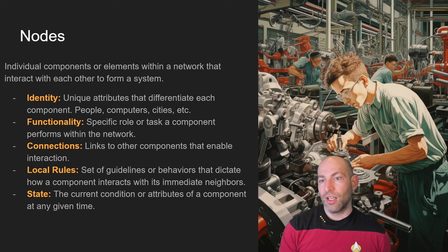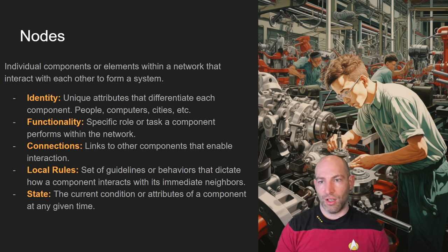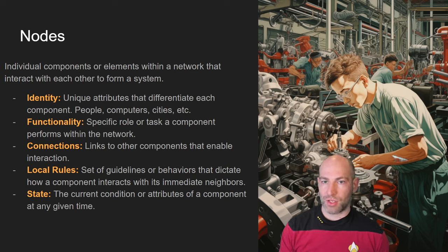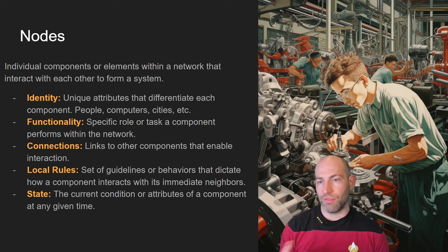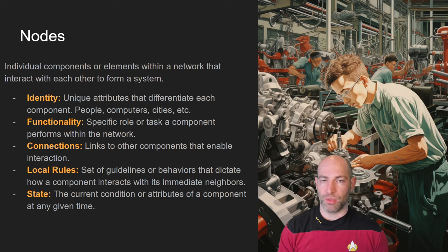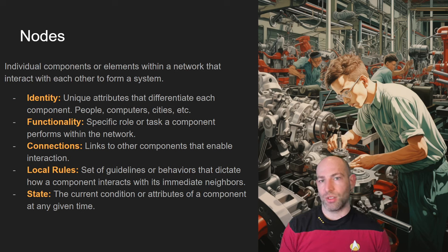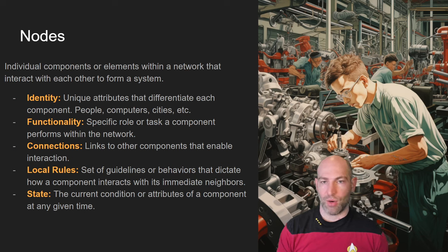Nodes can also change state. For example, if you're working in a large factory and a machine breaks down, its state goes from operational to broken down or defunct. In a longer-term system, you might have things in different phases of their life — something might be brand new, old, or due for retirement. This life cycle state is especially relevant in software and hardware systems and networks.